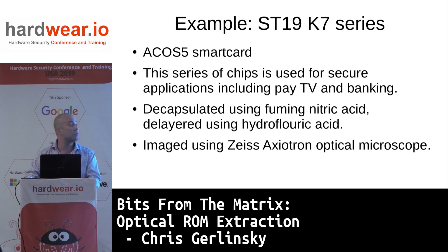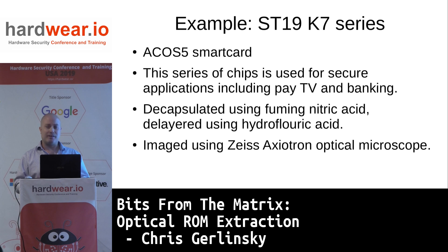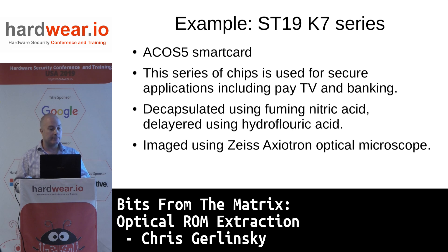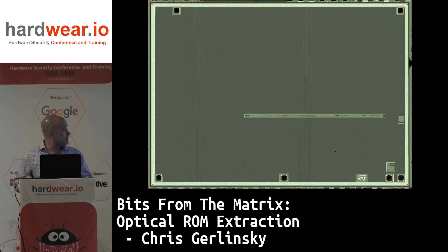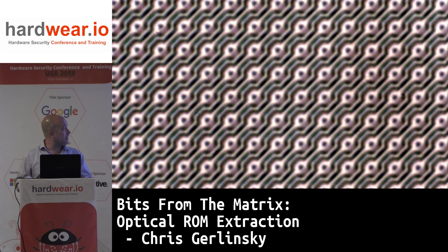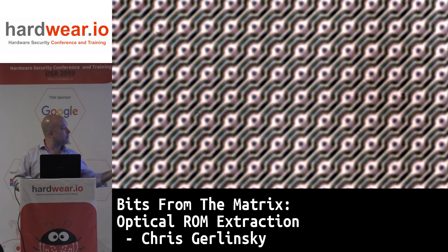An example of the ROM extraction process: this is an ST19 smart card, K7 series — the ACOS 5 smart card, which you can buy to load your own programs. The same series of chips is used for other secure applications including pay TV, banking, and similar. The chip is decapsulated using fuming nitric acid and then de-layered using hydrofluoric acid, imaged on a Zeiss Axiotron optical microscope. After decapsulation, not much is visible because this chip has a shield layer on the very top — a metal line that snakes around carrying ground. If you disturb this shield layer the chip will stop running, but for ROM extraction I don't care if it's running — I just want to see below it.